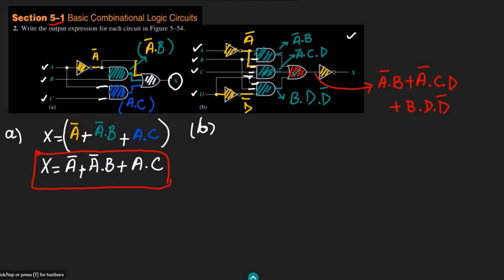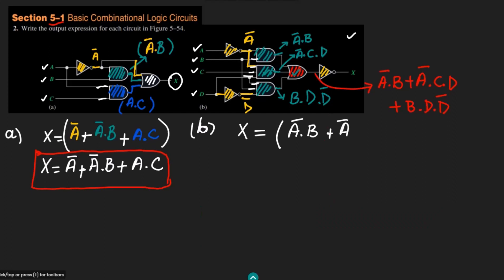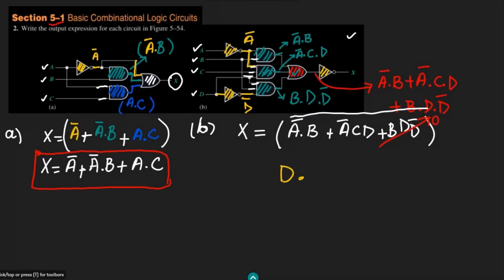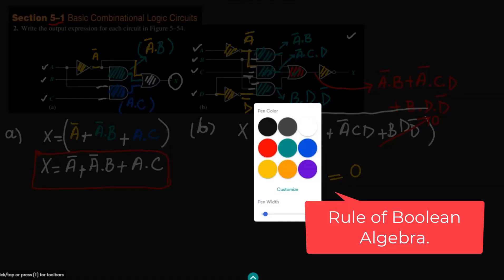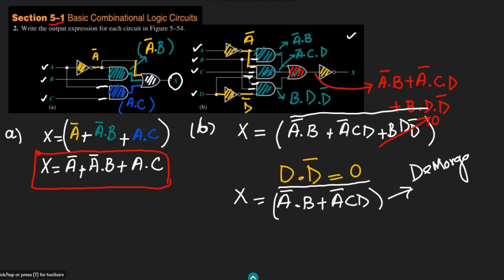To find X, all of that is complemented, so X equals the complement of (A complement dot B plus A complement dot C dot D plus B dot D dot D complement). We can see that D dot D complement is always equal to 0, so that term is removed. The simplified expression inside the complement is A complement dot B plus A complement dot C dot D. We could also simplify further using De Morgan's law, but we leave it as is.